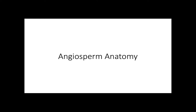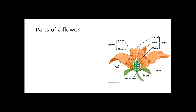This is going to be a brief video covering angiosperm anatomy. Sepals enclose the flower. Petals are the brightly colored portion that attracts pollinators.